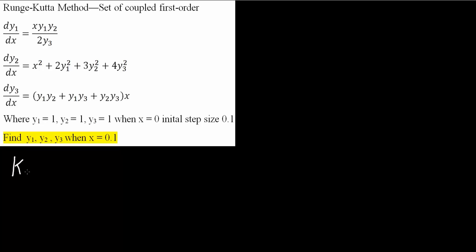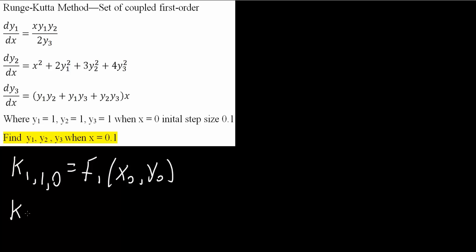So we say k1,1,0. We have a set of coupled equations, and so that's why we write it in this notation, where 1 represents the first k for the first equation, and 0 represents that x is equal to 0. This will equal f1(x0, y0). Next we do k1,2,0 — the first k for equation 2 where x equals 0 — so this will be f2(x0, y0).